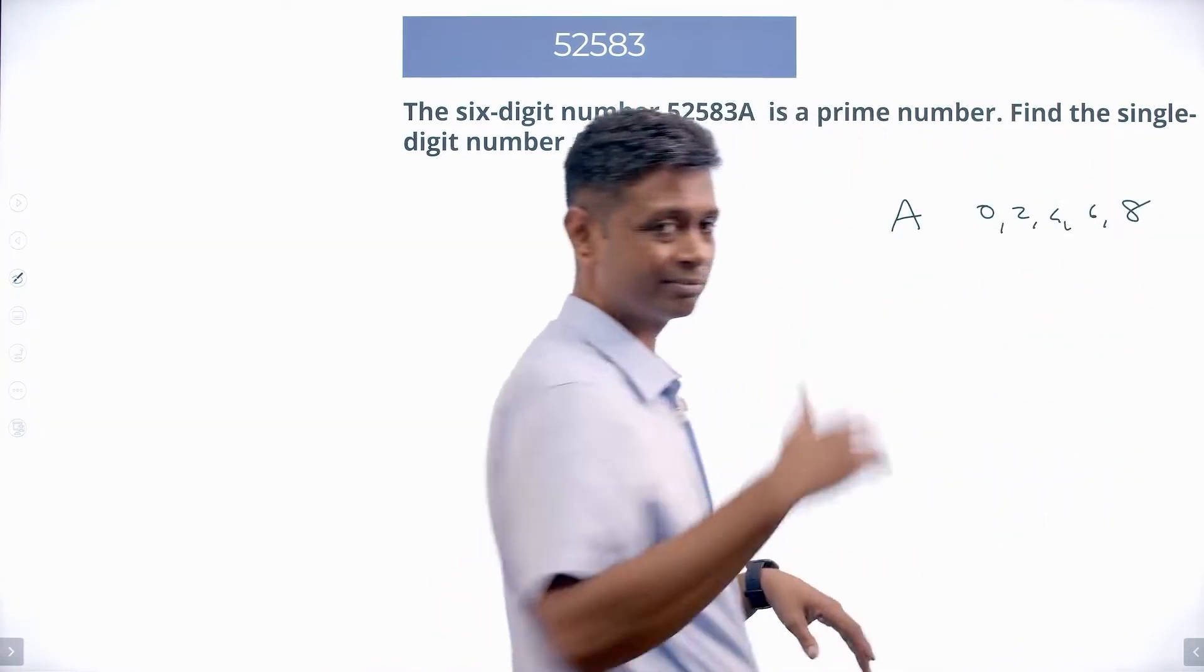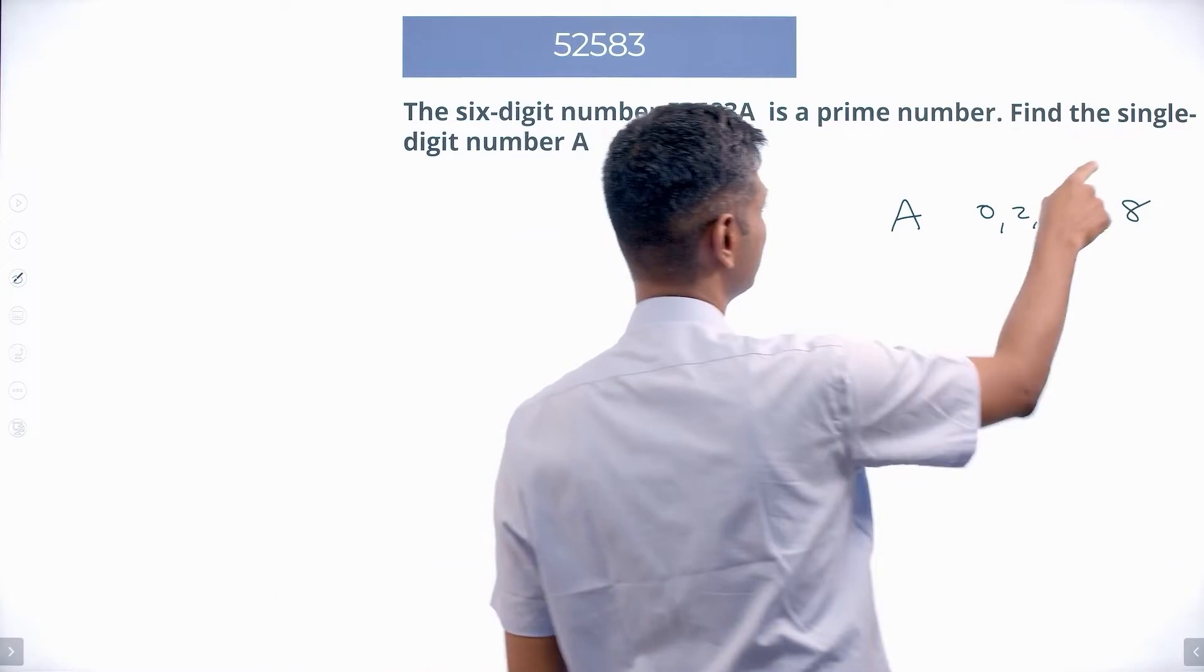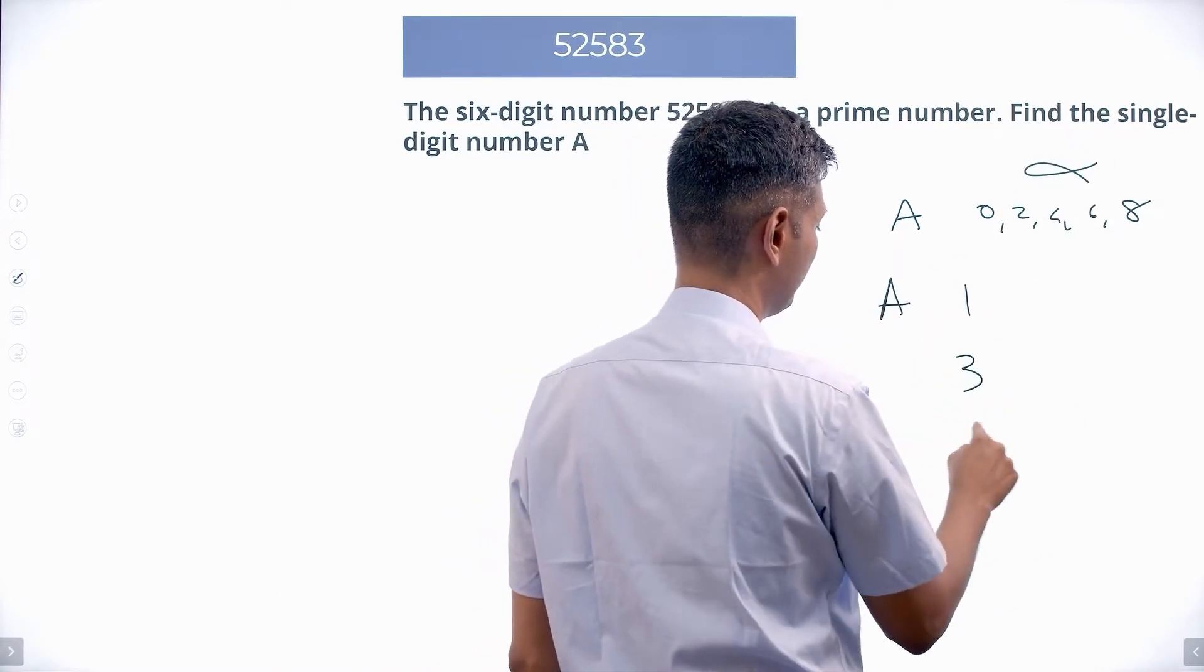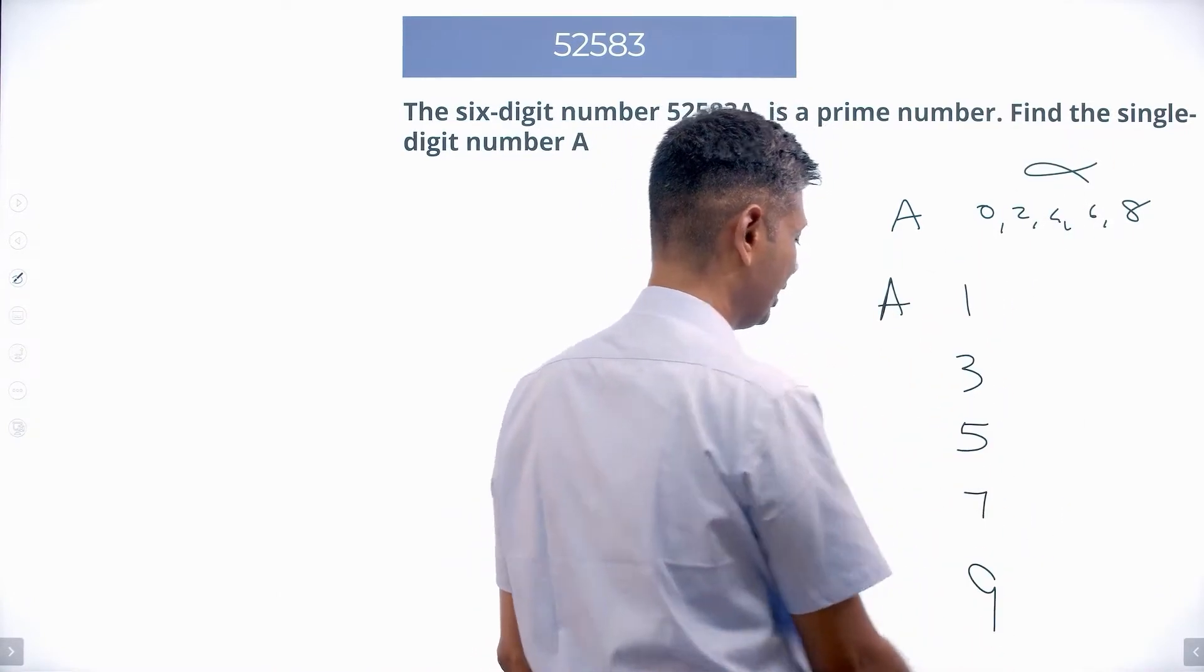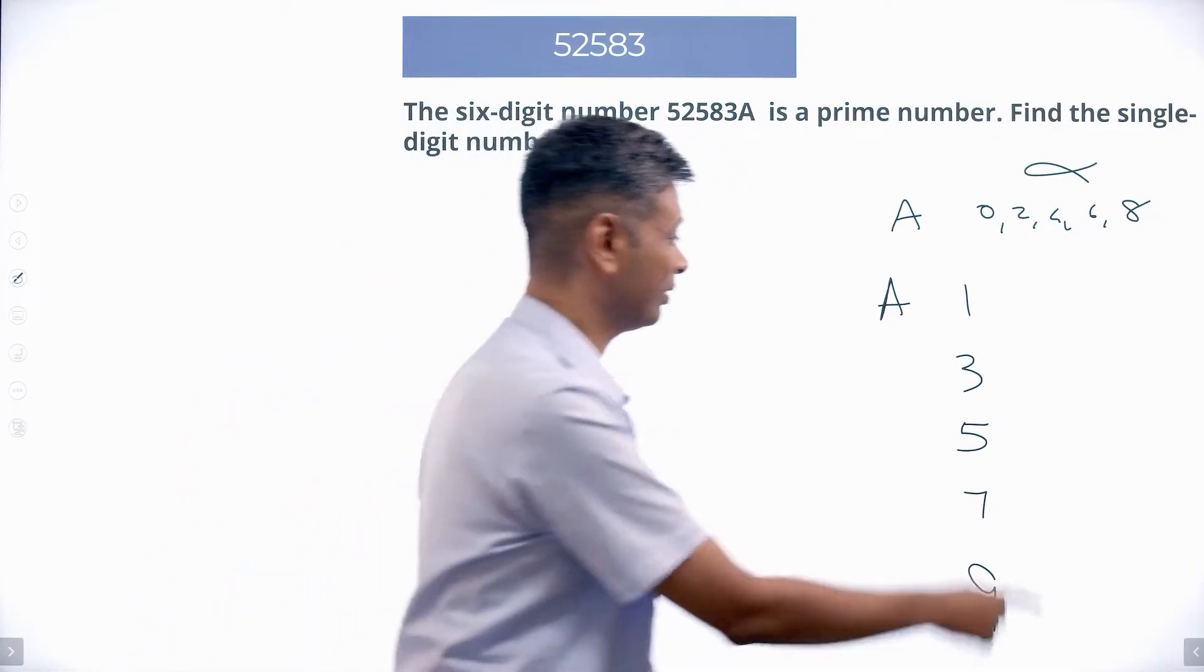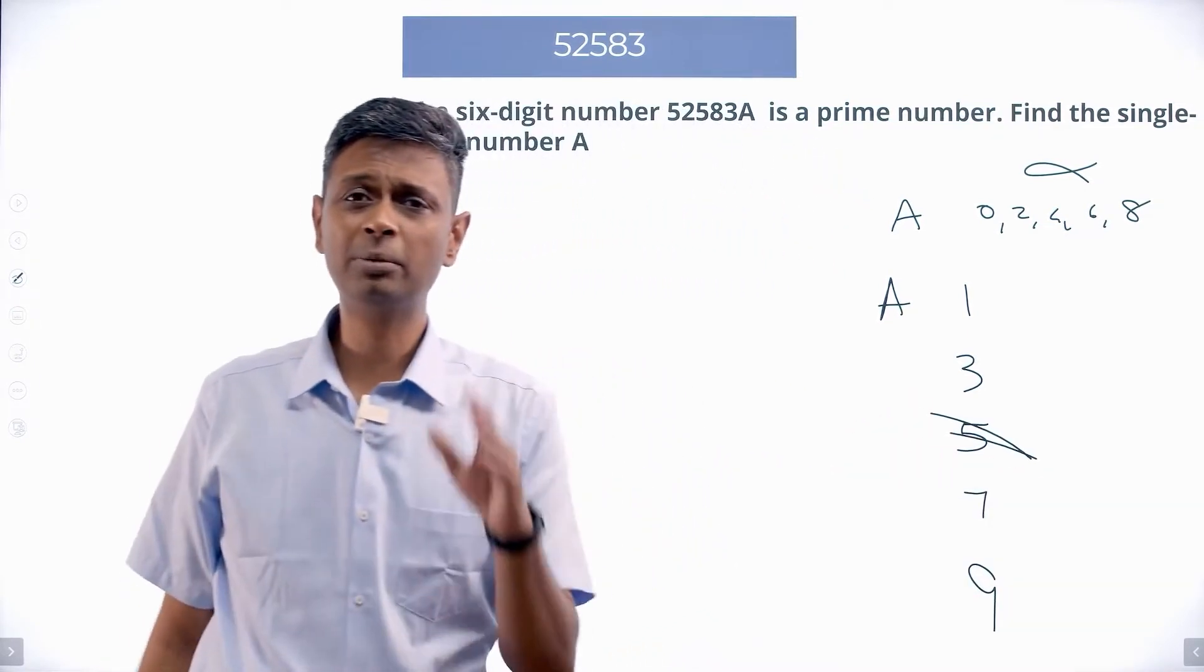8. Not possible. All of these are out. A can only be 1, 3, 5, 7, or 9. The moment I write this, I know it cannot be 5. Why? Then it will become a multiple of 5.